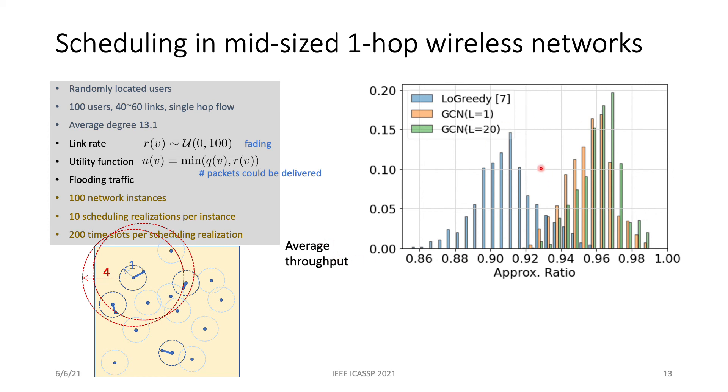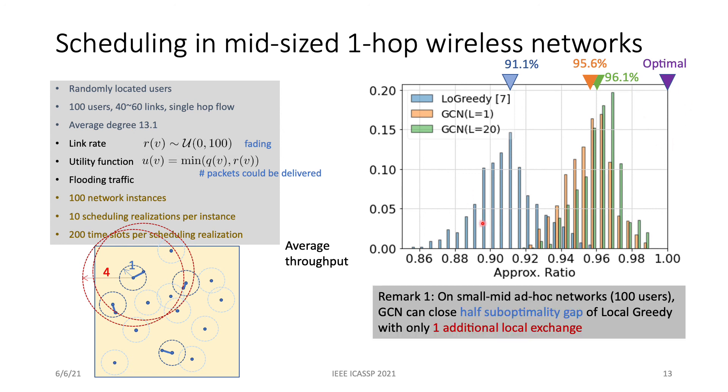This figure shows the approximation ratio of the average throughput of the three heuristic schedulers. Here, the local greedy scheduler achieved 91.1% on average, while the GCN scheduler of 1 and 20 layers achieved 95.6 and 96.1% respectively to the optimal. So the GCN, in this case, can close half the sub-optimality gap of the local greedy scheduler with only one additional local exchange. Also, we noticed that the GCN with only one layer is a good choice because of its low complexity and the performance that's close to the 20-layer GCN.